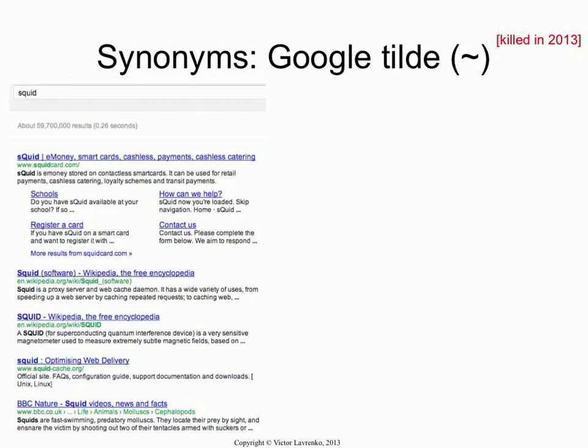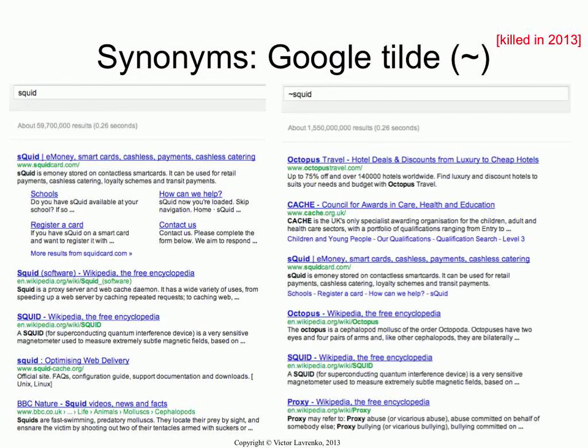So tilde is Google's expansion operator. You can type squid into Google — and I guess this was as of a year ago — and what you get is an entry related to squid the software, an entry related to squid the magnetometer, there's your caching proxy server, and down there is the animal. That's the first hit on the animal, and there's no food inside. So if you use the tilde operator, you get a very different set of results.